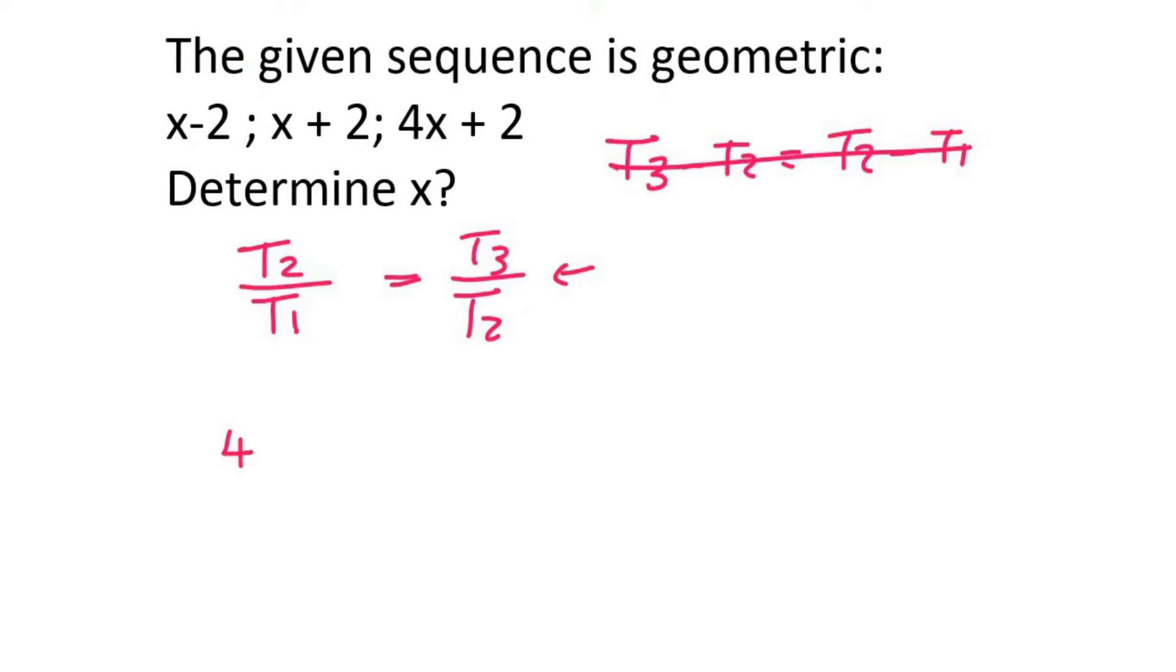If we have a simple geometric pattern like 4, 12, 36 where we're multiplying by 3. If I take term 2 divided by term 1, that gives 12 divided by 4 which is 3. If I take term 3 divided by term 2, that's 36 divided by 12 which is 3.